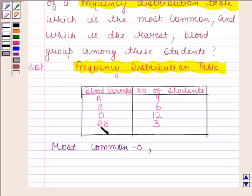And 3 students have AB blood group, so rarest blood group is AB.